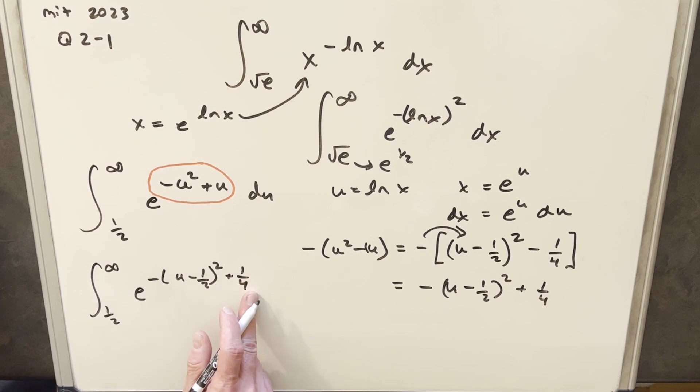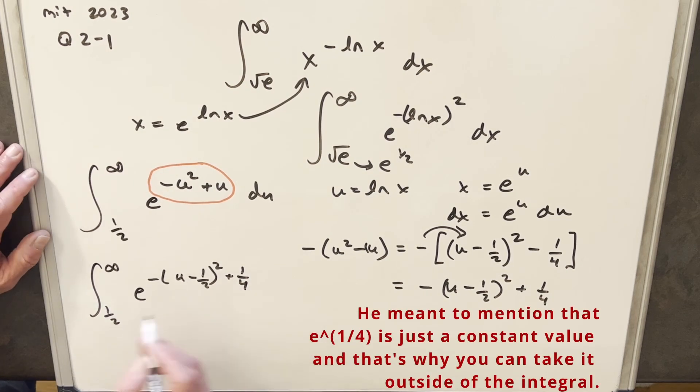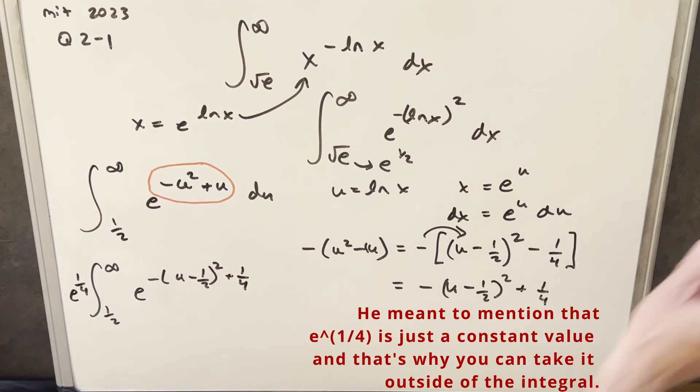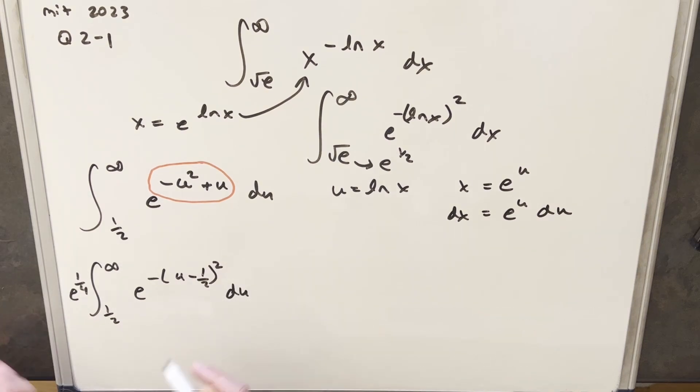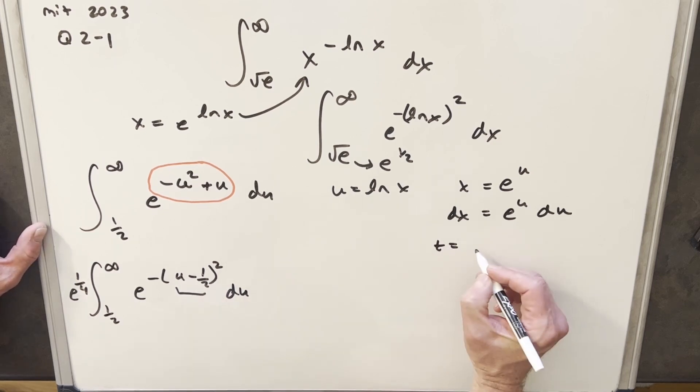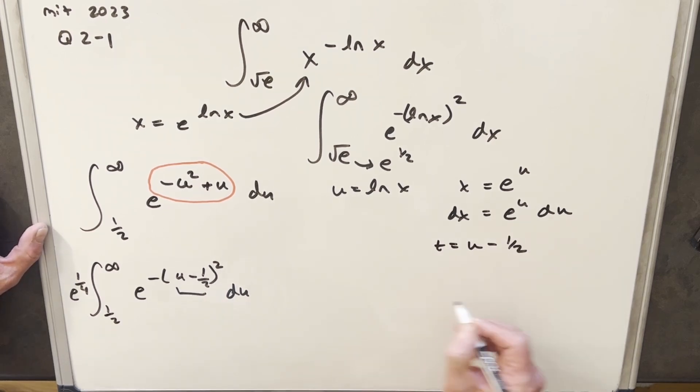But what I want to do is, just notice this is the same as multiplying by e to the 1 fourth. So what I can do is take e to the 1 fourth and bring it up front and just remove this piece right here. Then one last move to clean up this exponent. I still don't quite like it. What we can do, though, is we'll just make a t substitution. I'm going to call my t equal to this whole thing, u minus 1 half. Then taking our derivative, dt is going to be equal to du.